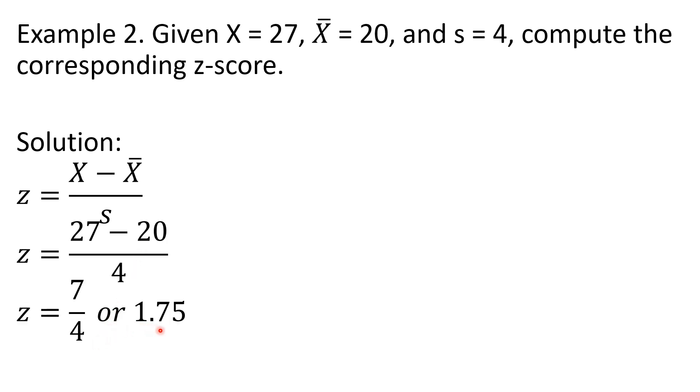That means the score 27 is 1.75 standard deviations away from the average or the mean. Or, to be more particular, that is 1.75 standard deviations above the mean.